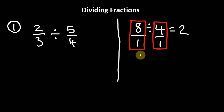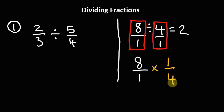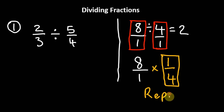Now here's something cool. This is the same thing as if we had 8 divided by 1, multiplied by this fraction flipped. By flipped, we mean we interchange the denominator and the numerator — we bring the denominator to the top and the numerator to the bottom. So we carry the 1 up to the top and carry the 4 to the bottom. This right here is called the reciprocal.